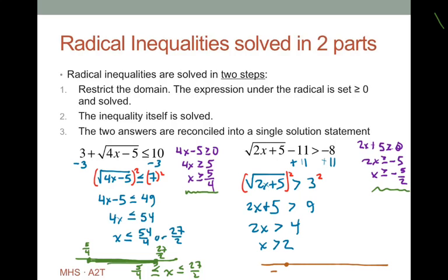Putting those on a number line: x is greater than negative 5 halves and x is greater than 2. Since x greater than 2 supersedes x greater than negative 5 halves — if you're greater than 2, you're also greater than negative 5 halves — the final solution is x is greater than 2, graphed with an open circle at 2. And that concludes this lecture.